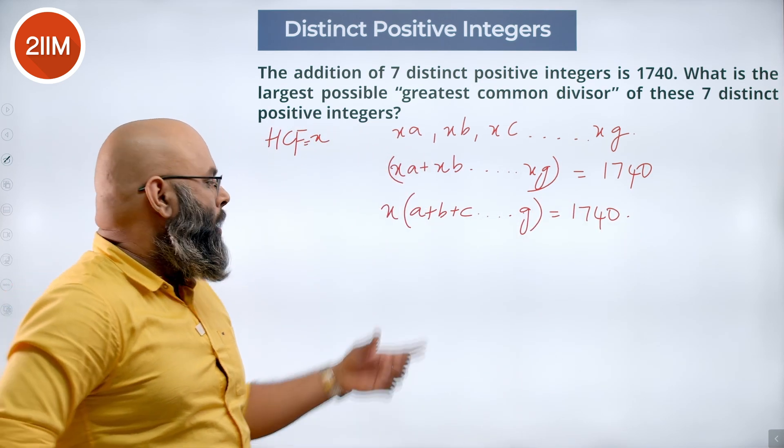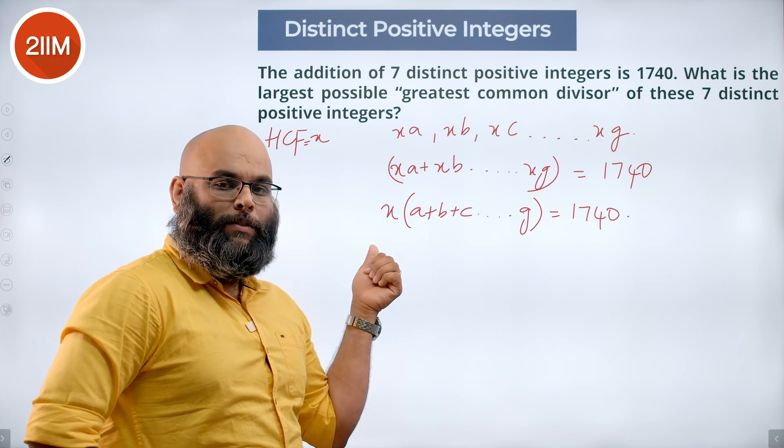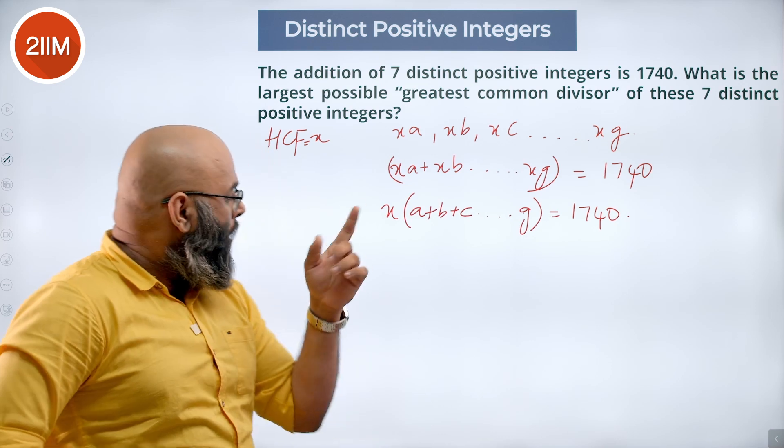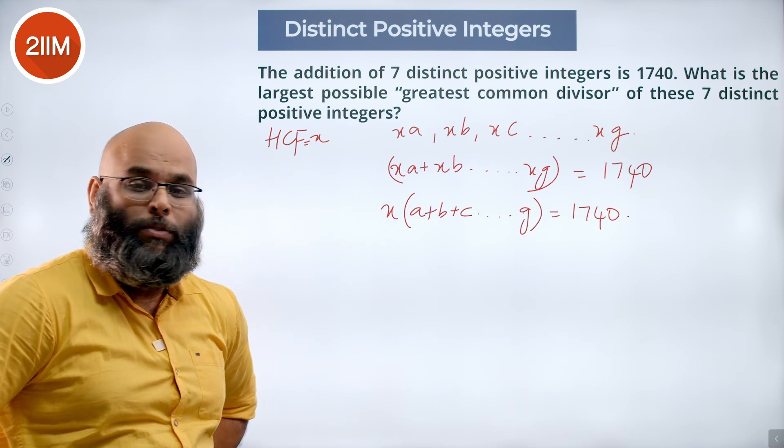So A to G sum gives me a value, X is the HCF of this number. So X into this value gives me 1740. We have to find the highest common factor.